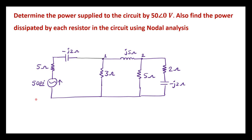In this video, I will consider one numerical on nodal analysis. Determine the power supplied to the circuit by 50 volts. Also find the power dissipated by each resistor in the circuit using nodal analysis. This is the given circuit; we are supposed to calculate the power supplied by this 50 volt voltage source and also find the power dissipated by each resistor in the circuit.